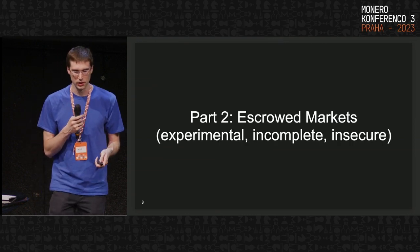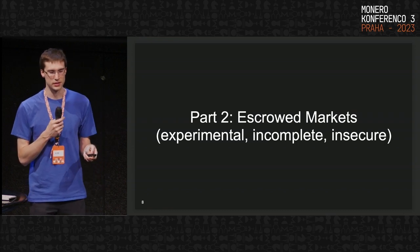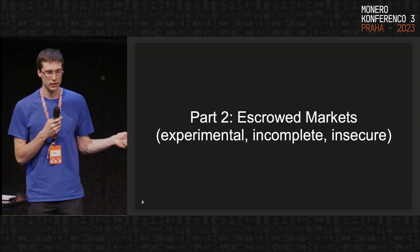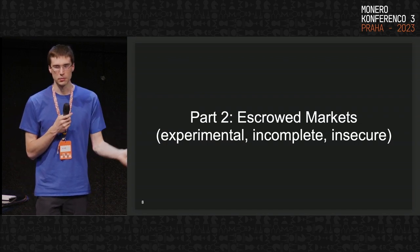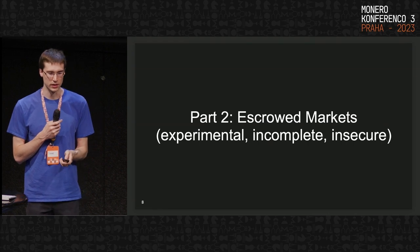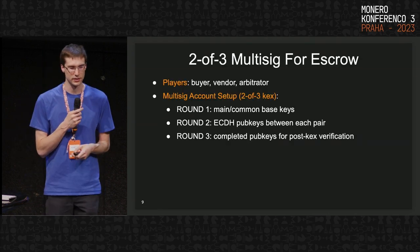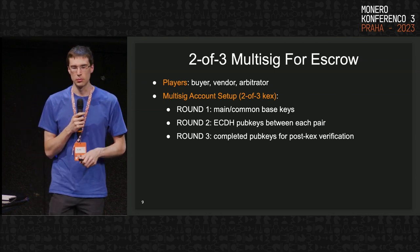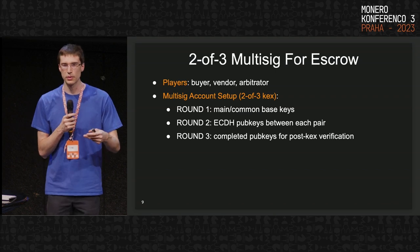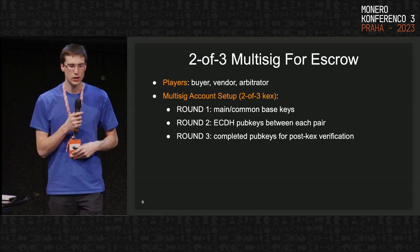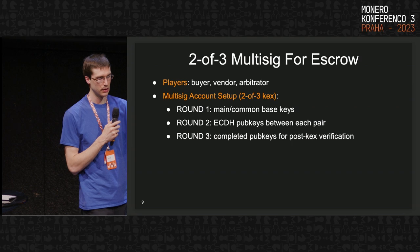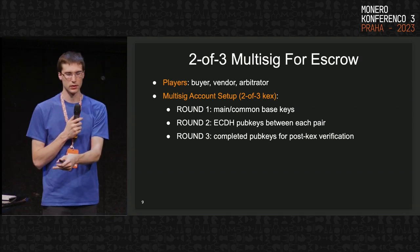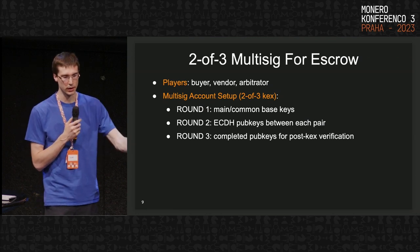With all that out of the way, we can discuss how this can be applied to an escrow marketplace — with the caveat that what I'm discussing is experimental, incomplete, and probably insecure, hopefully not but probably. In an escrowed market we have three players: the buyer, who encounters a vendor with some product, and a third-party arbitrator who will handle disputes between the buyer and vendor.